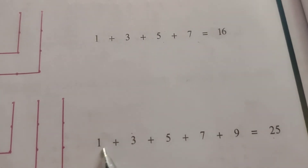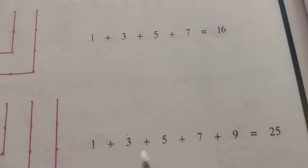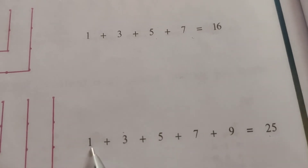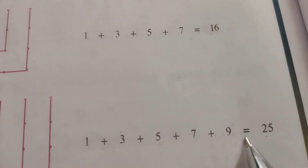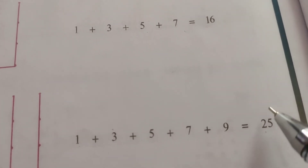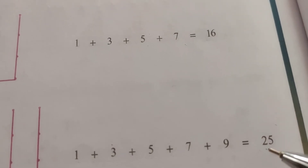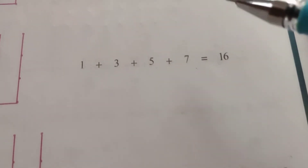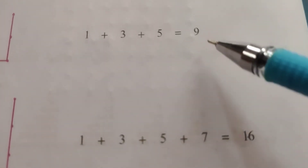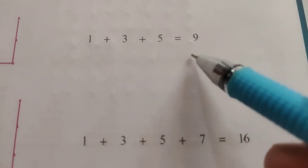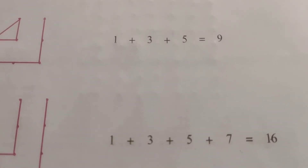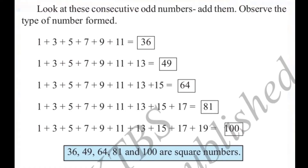These are odd numbers: 1, 3, 5 and so on. The sum of consecutive odd numbers gives square numbers. So adding odd numbers produces square numbers.